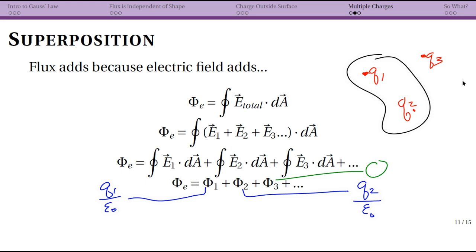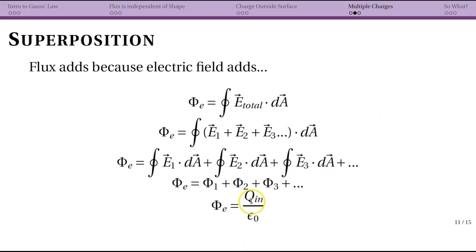We now see that this is going to simplify a little bit, so that the only thing that contributes is actually the charge that's on the inside. The charges on the outside don't contribute, so you just get to add up all of the charge on the inside and divide that by epsilon naught.